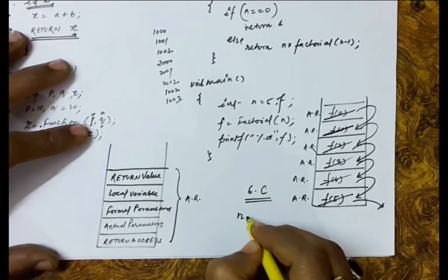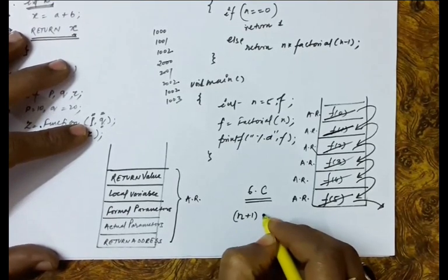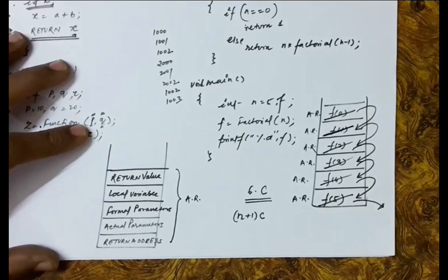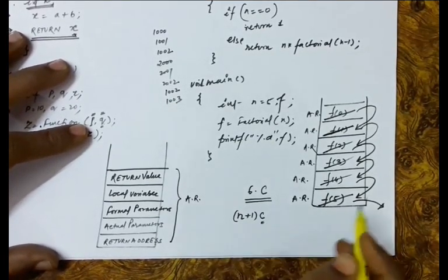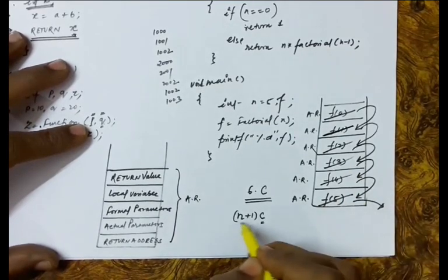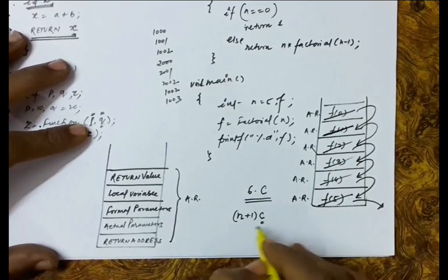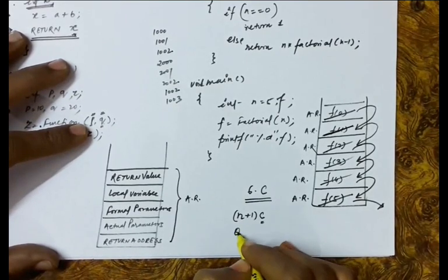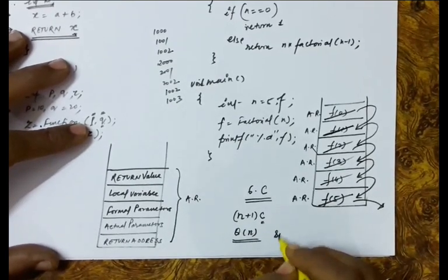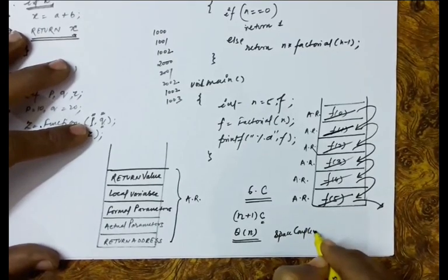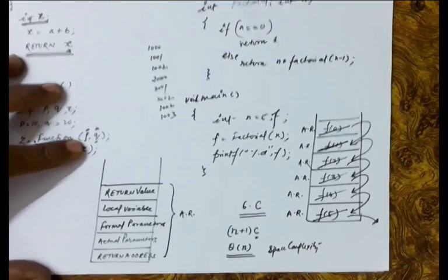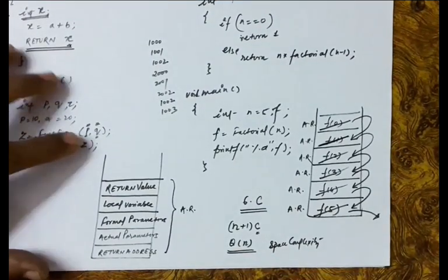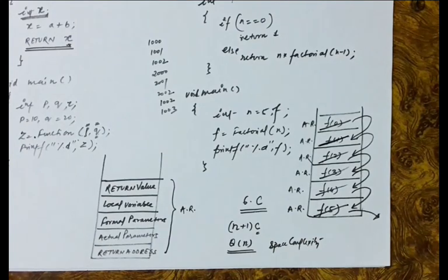If we are finding the factorial of n, then n plus 1 activation records are reserved on the stack region. So n plus 1 into C space is required in the memory, because for every activation record a constant space is required. Therefore we can say that theta(n) space is required. The space complexity of the factorial function recursively is theta(n), and this space is just because of storing these activation records.